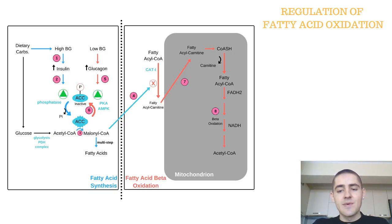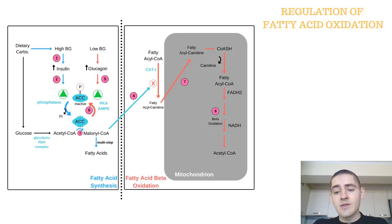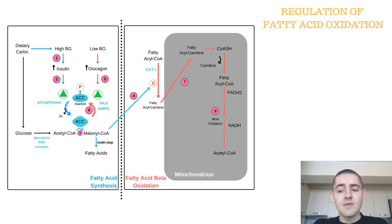Fatty acid oxidation is a tightly regulated process. Cytosolic Acetyl-CoA in the mitochondria can have two fates: oxidation by mitochondrial enzymes, or conversion into triglycerides and phospholipids. Fatty acid oxidation is unnecessary when there is enough energy coming from dietary carbohydrate.